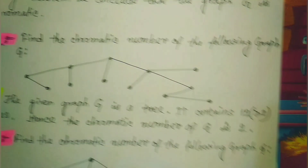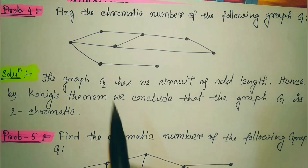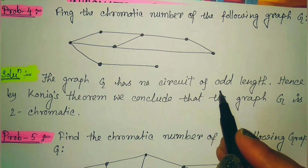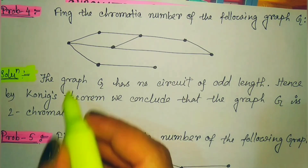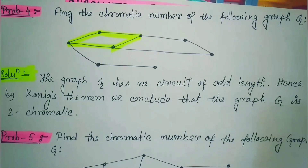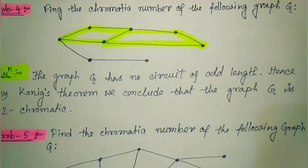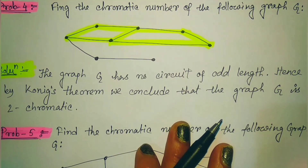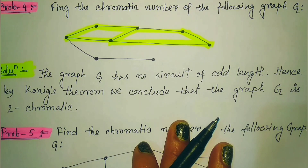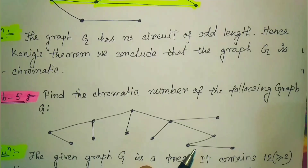The next problem: find the chromatic number of the following graph G. This graph has no circuit of odd length — checking the circuits, they all have four edges, so only even circuits exist. Hence by König's theorem, since the graph has no odd circuit, its chromatic number is 2.